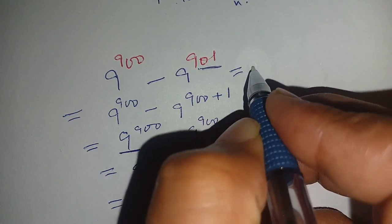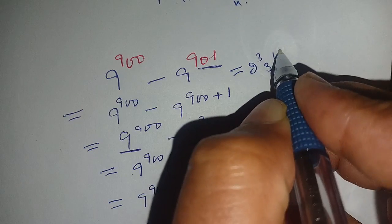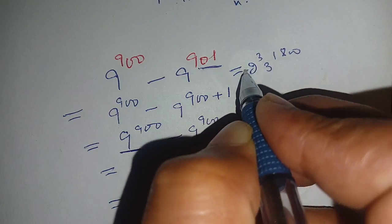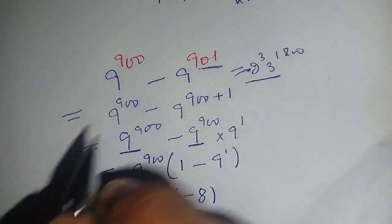The final answer is equal to -2^3 × 3^1800.